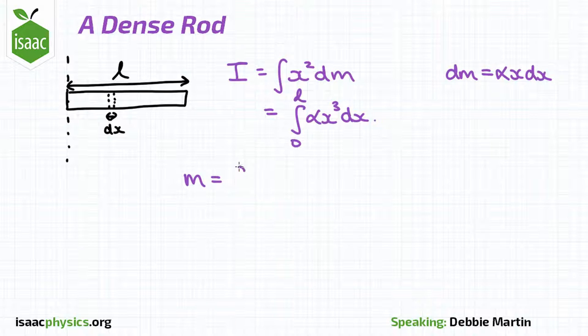We also know that the mass is the integral of alpha x dx evaluated between 0 and L. Evaluate these two integrals and obtain an expression for I in terms of m and L.